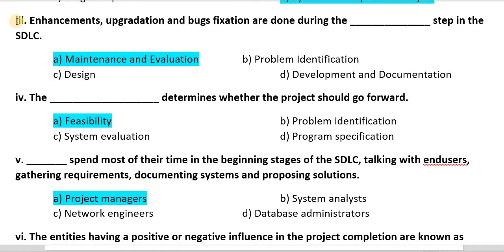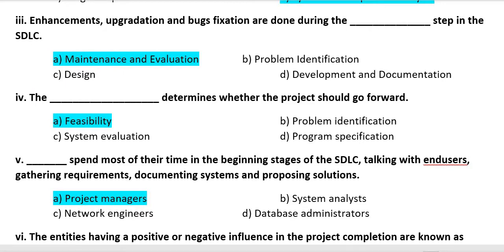Question three: Enhancements, Upgradation and Bugs Fixation are done during the blank step in the SDLC — (A) Maintenance and Evaluation, (B) Problem Identification, (C) Design, or (D) Development and Documentation. The correct answer is Option A, that is Maintenance and Evaluation.